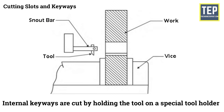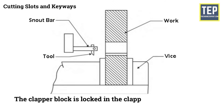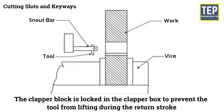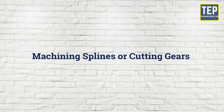Internal keyways are cut by holding the tool on a special tool holder so the tool post will not hit against the work at the end of the stroke. The clapper block is locked in the clapper box to prevent the tool from lifting during the return stroke. Lubrication is necessary on the work to prevent the cutting edge of the tool from wearing due to dragging.